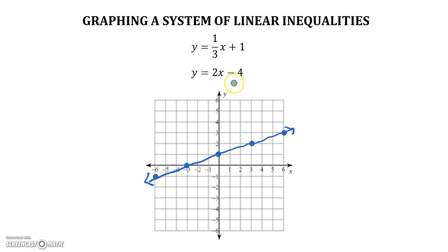Now graphing the second equation: y equals two x minus four. Our y-intercept is at negative four, and our slope is two, so up two over one.